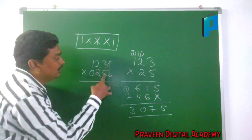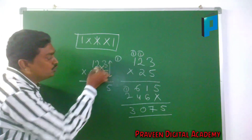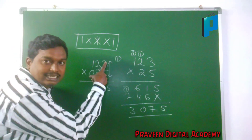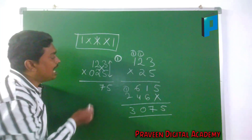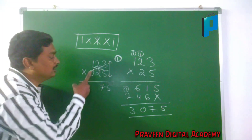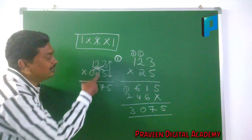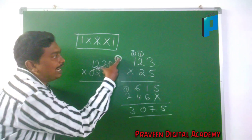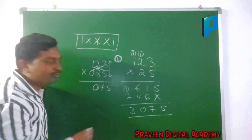Now multiplying 123 × 025: 5×3 is 15, write 5 and carry 1. Next position: 5×2 is 10, 2×3 is 6, 10 plus 6 is 16, plus 1 carried is 17 — write 7 and carry 1. Next: 5×1 is 5, 0×3 is 0, 5 plus 0 is 5; center pair 2×2 is 4; total 5 plus 0 plus 4 is 9, plus 1 carry plus 1 carry is 11 — write 0 and carry 1.